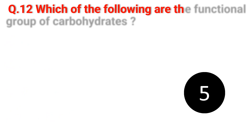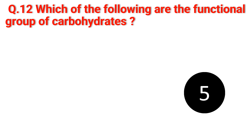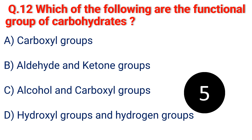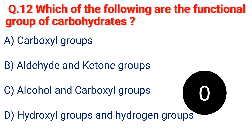Question 12. Which of the following are functional groups of carbohydrates? A. Carbohydrates. B. Aldehyde and ketone groups. C. Alcohol and carboxyl groups. D. Hydroxyl groups and hydrogen groups. The answer is B. Aldehyde and ketone groups.